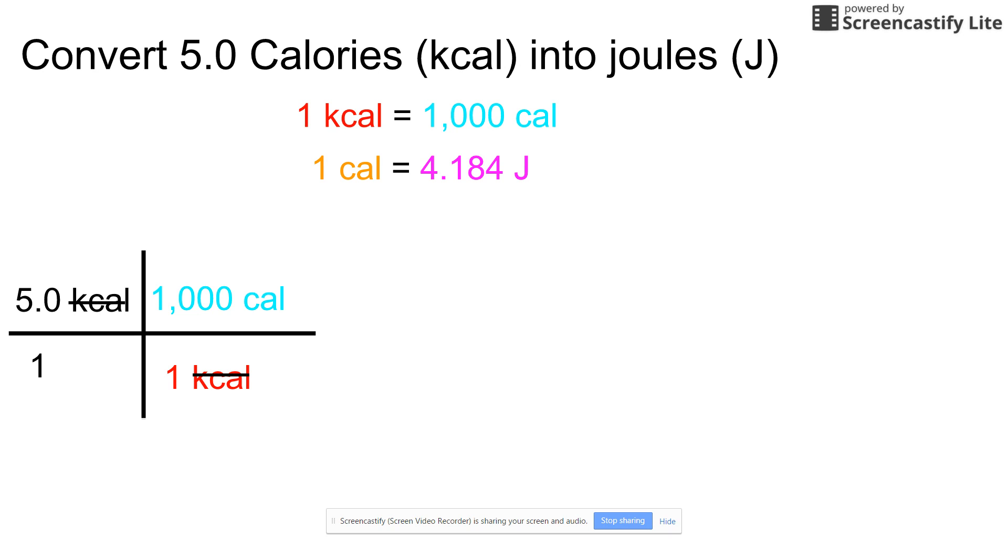And then those will cancel. If you stopped here, you would end up with lowercase calories, but you don't want to stop there because the question tells you to go to joules. So you need to write another bridge. Then you have your second equation, 1 calorie equals 4.184 joules. That's how you're going to get to joules. On the bottom right here, you're going to put 1 calorie because you want the calories to cancel out. And then you're going to put the 4.184 joules on top of that.